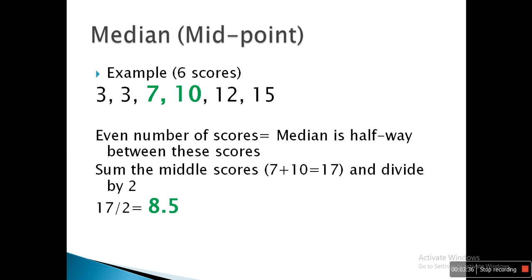Let's take one more example. The six scores are 3, 3, 7, 10, 12, and 15. In this case there are two middle values — 7 and 10 — which means there is an even set of numbers. In such cases we take the two middle values and find their average, and that value becomes the median. So 7 and 10 are the third and fourth values; we sum them and divide by 2, giving a median of 8.5. This is how we find the median when there are even numbers in the list.